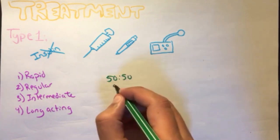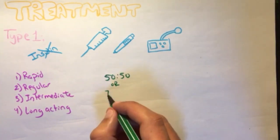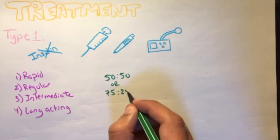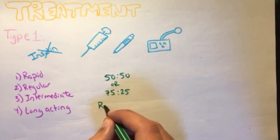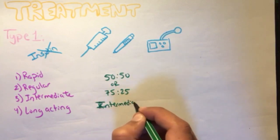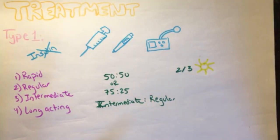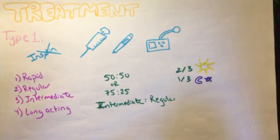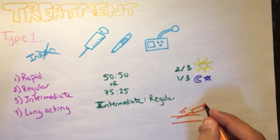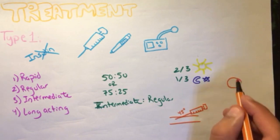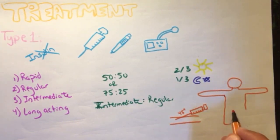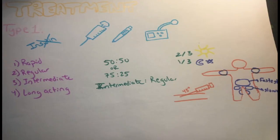A patient with type 1 diabetes is given two shots of a mixture of 50 to 50 or 75 to 25, intermediate to regular. Two-thirds of this dose is given in the morning to prevent fasting hyperglycemia, and one-third is given in the evening to prevent nighttime hypoglycemia. They are given subcutaneous at a 45-degree angle in the buttock with the slowest absorption or in the abdomen with the fastest absorption, or it can also be given in the thighs or arms.